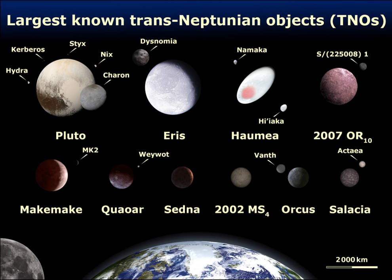Galileo did note that the 'star' Neptune did seem to move, noting that between his two observations its apparent distance from another star had changed. However, unlike photographic images, drawings such as those Galileo made are usually not precise enough to be of use in refining an object's orbit. In 1795, Lalande also mistook Neptune for a star. In 1690, John Flamsteed did the same with Uranus, even cataloguing it as '34 Tauri'.